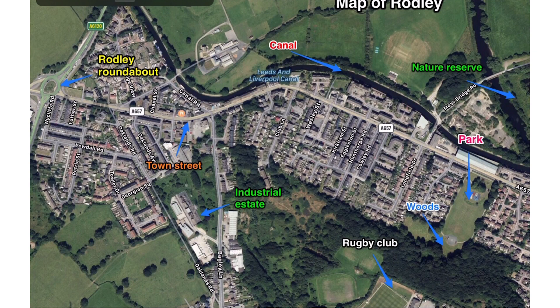So your finished annotated map might look something a bit like this. You'll see it's a map of Rodley, which is a small village in Leeds. I've chosen a satellite image so that you can see the detail as if you're looking down from above. Then using the arrows and text I've labelled the key areas such as Town Street, the Rugby Club, the Woods and the Park.